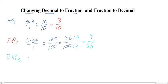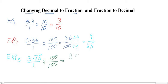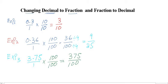Example number three: we have 3.75. Again consider there is a denominator of 1, then multiply by 100 because after the decimal there are two digits. Multiply by 100 and divide by 100 — it becomes 375 over 100. Now if you see there is a 5 at the end, the numerator and denominator are both multiples of 5, so we can divide by 5.